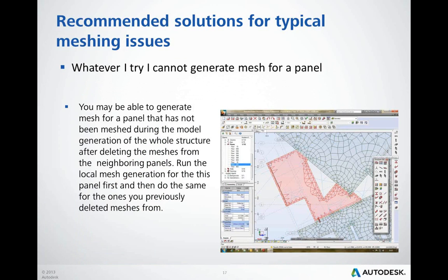Another solution for meshing issues may be reversing the order of meshing. This may help in many situations and is what the iterative adjustment of meshing does. But when you run this process manually with some additional adjustment of mesh parameters, this option may be more effective as you fully control the order of meshing. If everything you tried has failed, you may copy the panel with the problem away from the model, mesh it separately, and then replace the original panel with the one meshed outside the model. The last step is to manually move and merge nodes created at the edges of the moved panel with those from neighboring panels at the same common edges.